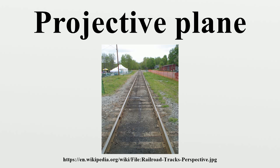In the figure, the 7 points are shown as small black balls, and the 7 lines are shown as 6 line segments and a circle. However, one could equivalently consider the balls to be the lines and the line segments and circle to be the points. This is an example of duality in the projective plane. If the lines and points are interchanged, the result is still a projective plane.